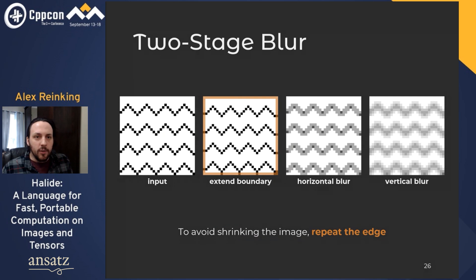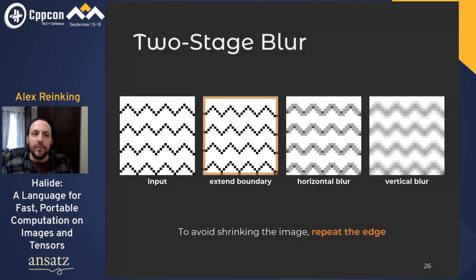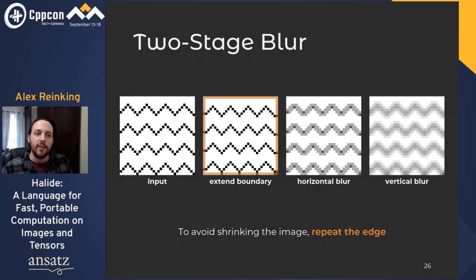As with all things in computer science, there are edge cases — and in image processing they happen to be very literal. If you're trying to blur pixels around the edge of the image, some values are missing. You could skip those pixels, but it would crop a one-pixel border off the image. Since we don't want that, we just extend the boundary by repeating the outer edge to keep the image size the same.